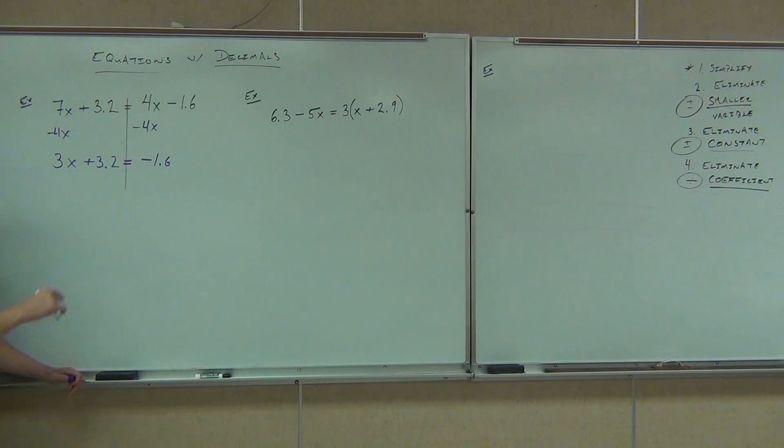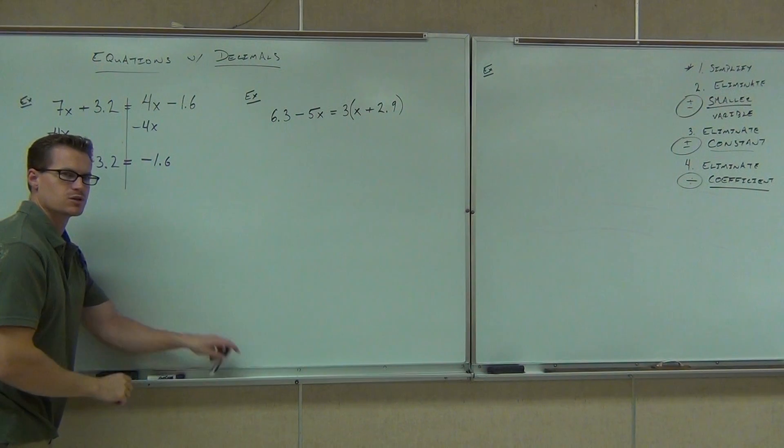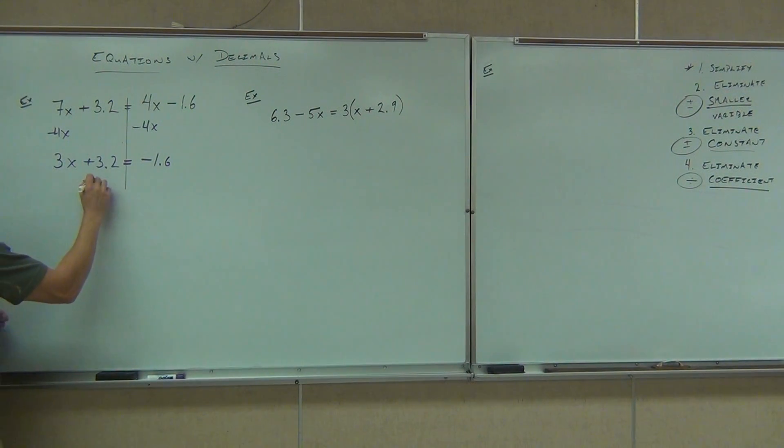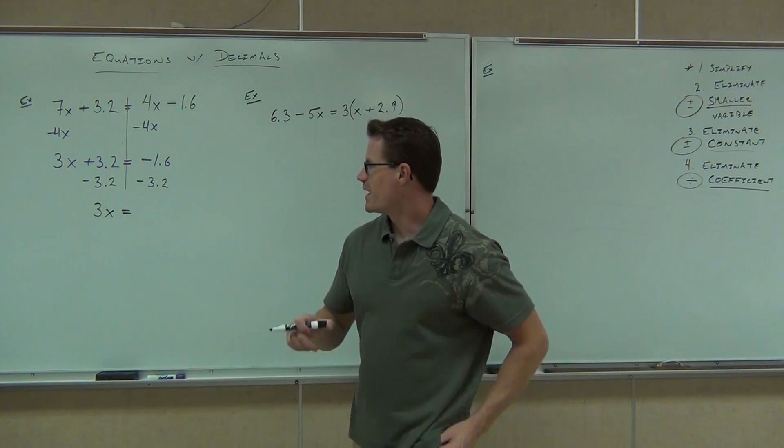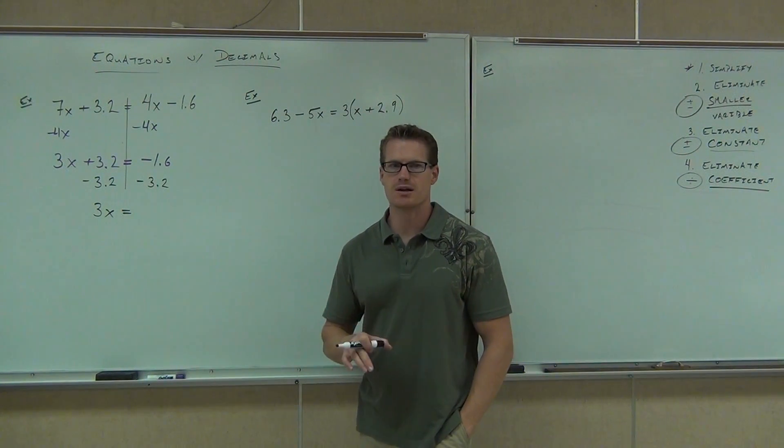Hey, what's the next thing? Do we get rid of the 3, the 3.2 or the negative 1.6? Negative 1.6. Do we get rid of that one? No. 3.2. Oh, we get rid of that one. How do we get rid of the 3.2? Subtract. So we get 3x equals, what is negative 1.6 minus 3.2? Remember we're subtracting here. Watch on the board with me, please.